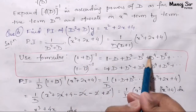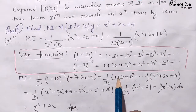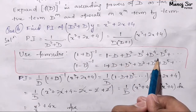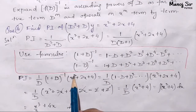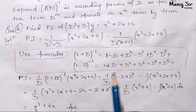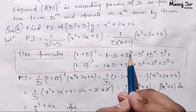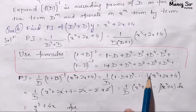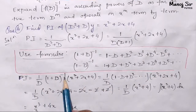The question arises: up to which term do we write the expansion? For this, we need to see the highest power of x, which is 2. So we write up to the second power: 1 minus D plus D² minus dot dot dot. This is 1 upon D times the expansion (1 minus D + D² minus ...) applied to (x² + 2x + 4).